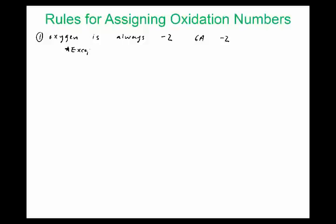The exception to the oxygen rule is peroxide. Peroxide is the polyatomic O₂²⁻: two oxygens with an overall charge of minus two, meaning each oxygen is minus one. This exception rarely comes up, but it's worth noting.